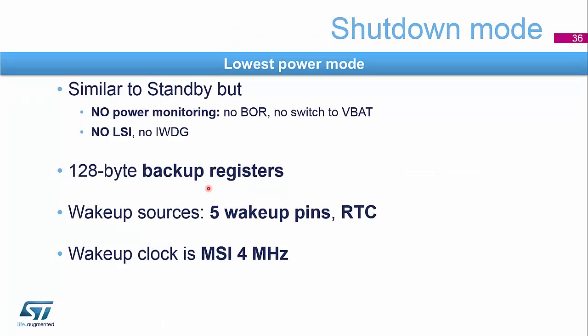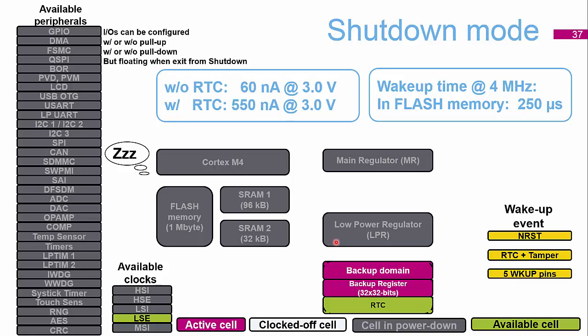The last power mode is shutdown mode — very similar to standby but with power monitoring, brownout reset, and V-BAT pin switchover removed, no LSI enabled, and no independent watchdog. Only 128 bytes of backup registers are retained. Wake-up sources are the wake-up pins or the RTC if enabled. In the peripheral picture, only the RTC runs from the LSE if enabled, and wake-up events are the reset, five wake-up pins, and RTC/tamper if enabled.